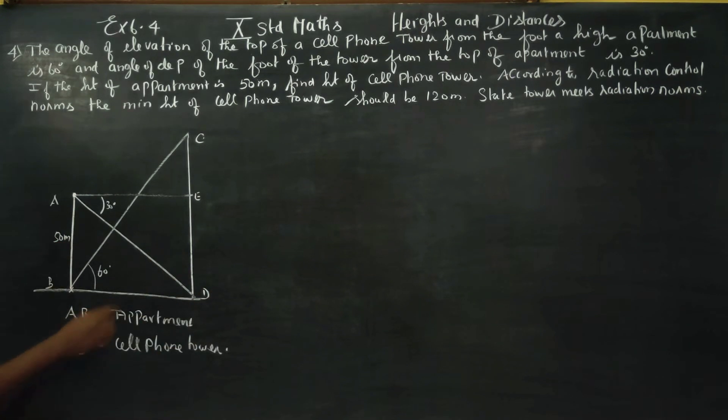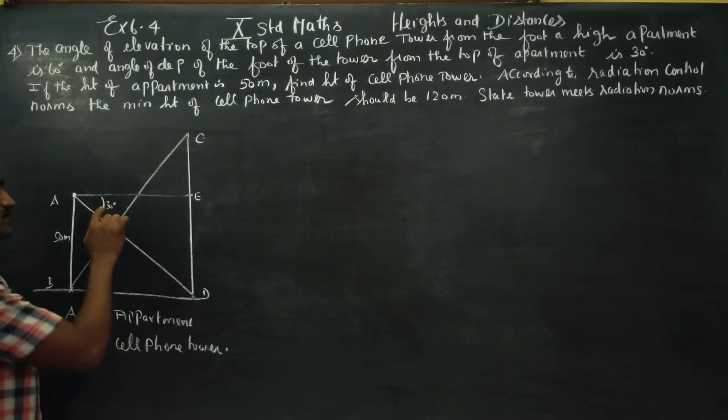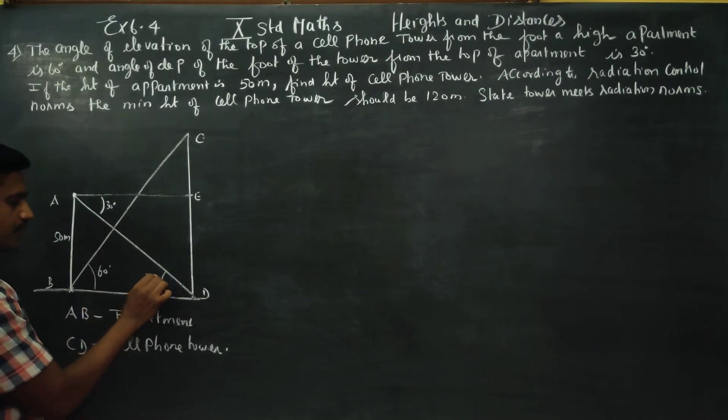This angle is 30 degrees using alternate angles. These lines are parallels, this is a transversal. Then alternate angles, it is 30 degrees.